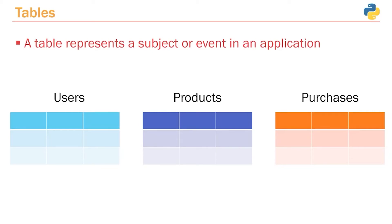Before we get started with configuring our Postgres database, there are a few things that we need to cover. One of those things is the concept of tables, and this is a very important concept when it comes to working with relational databases. A table represents a subject or event in an application. Let's use an example.